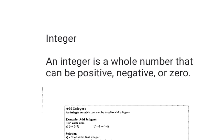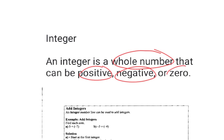The key words here are whole number, positive, negative, or zero. So if you remember, that's the positive sign, that's a negative sign, and that's zero.